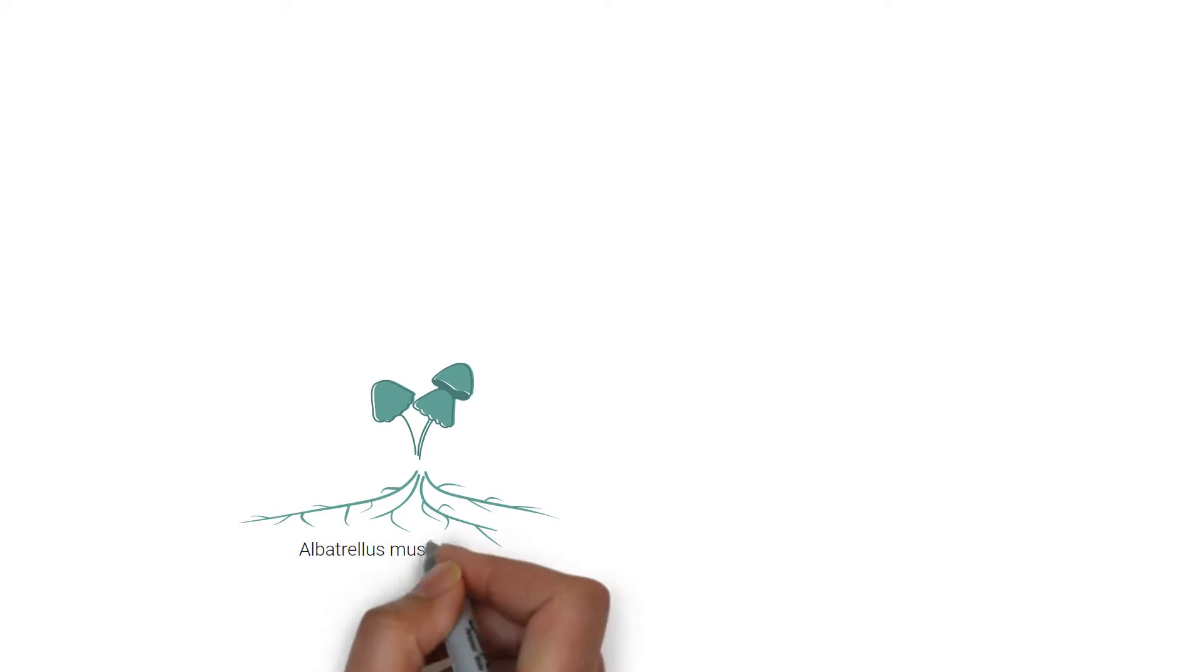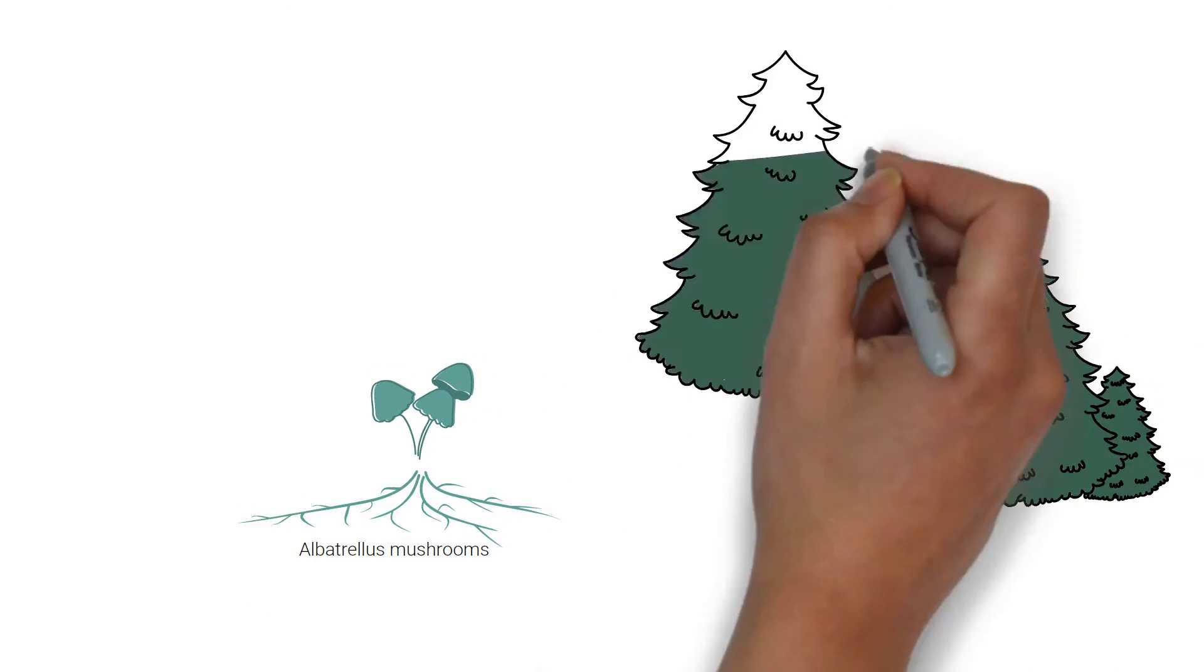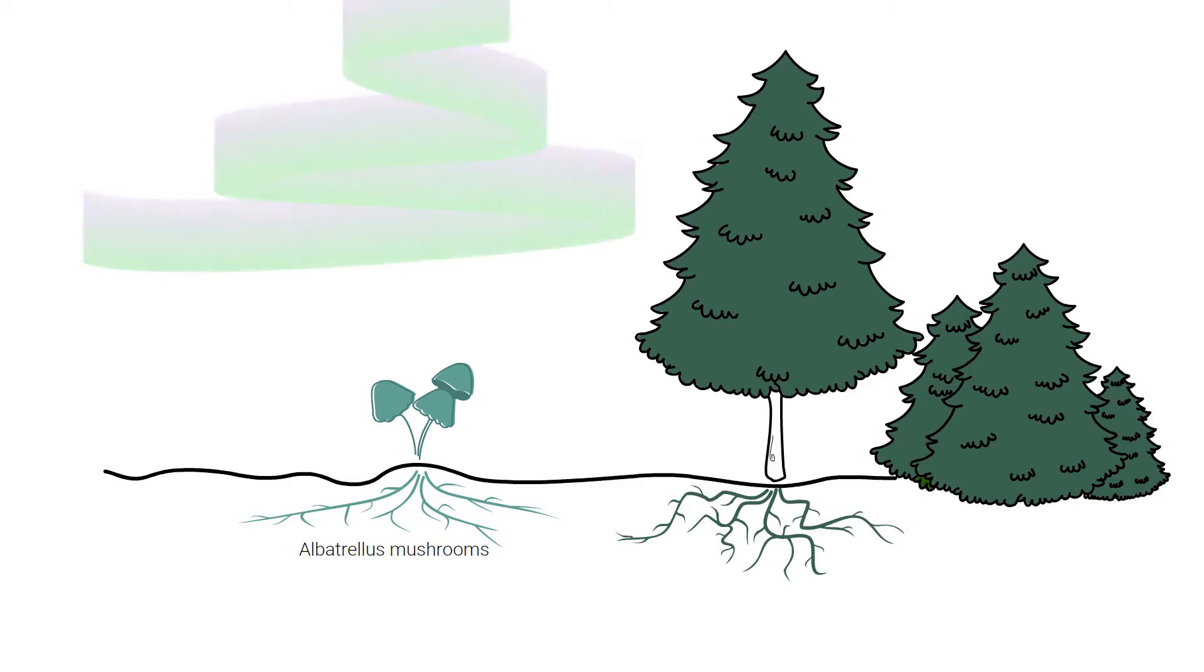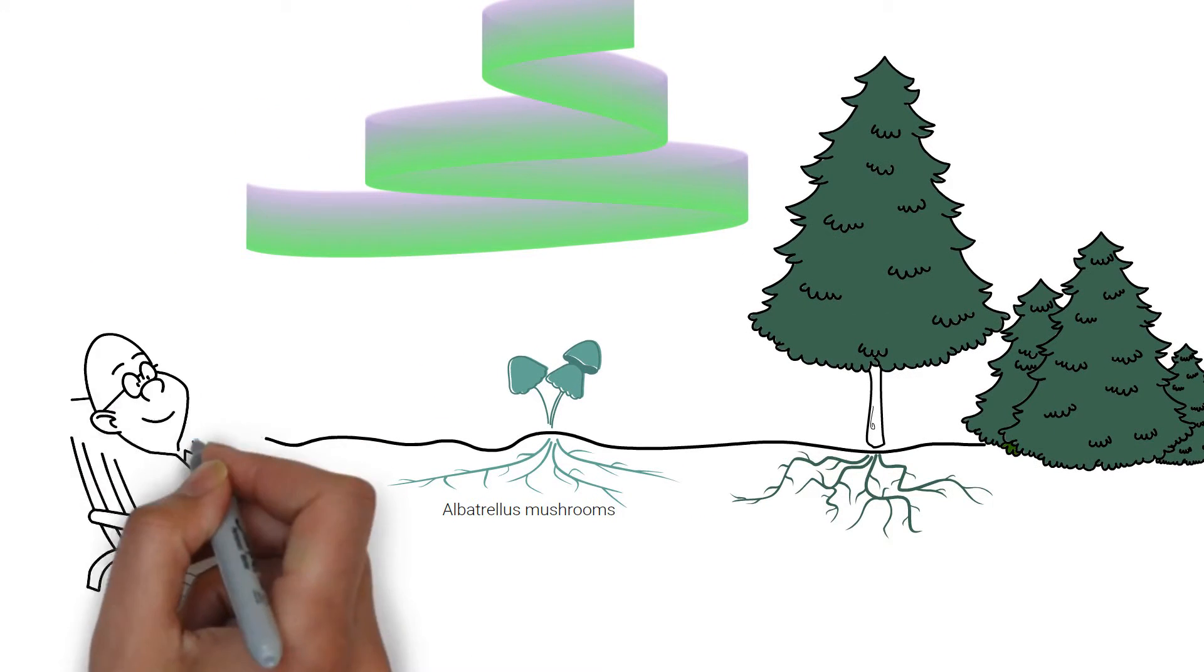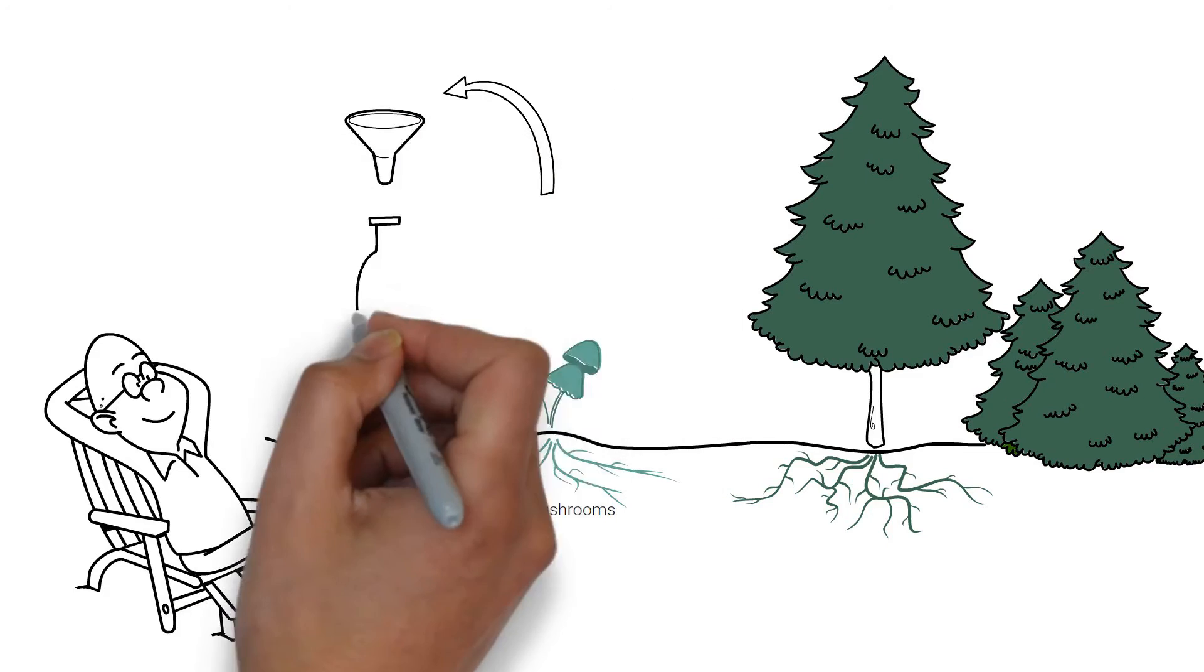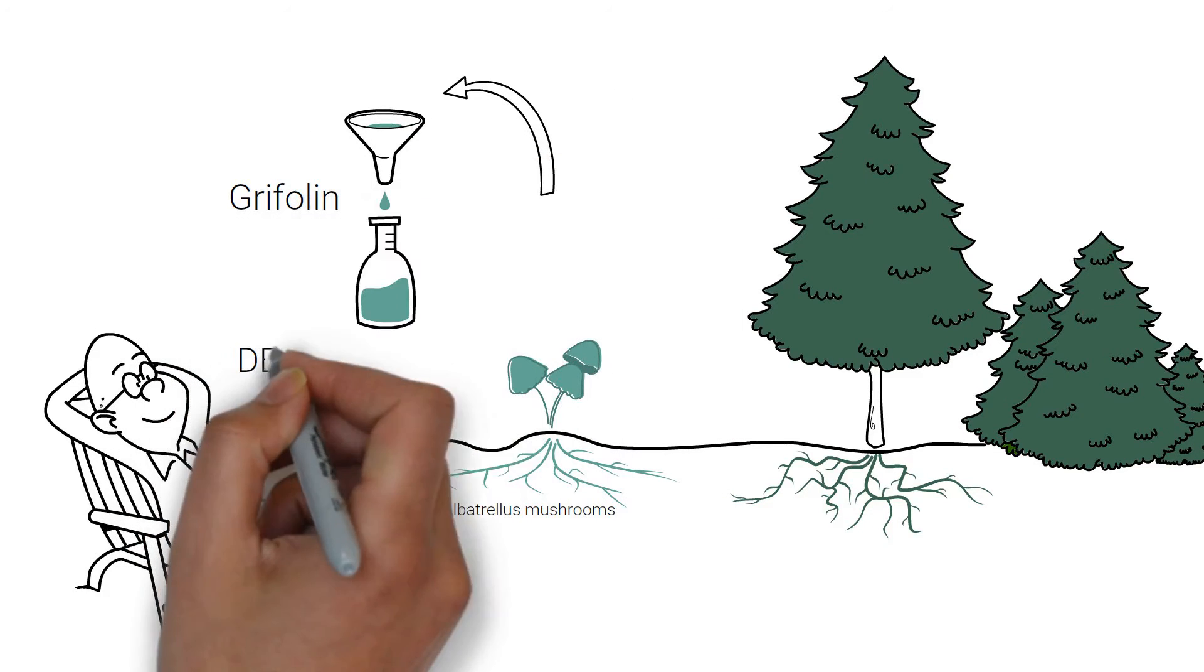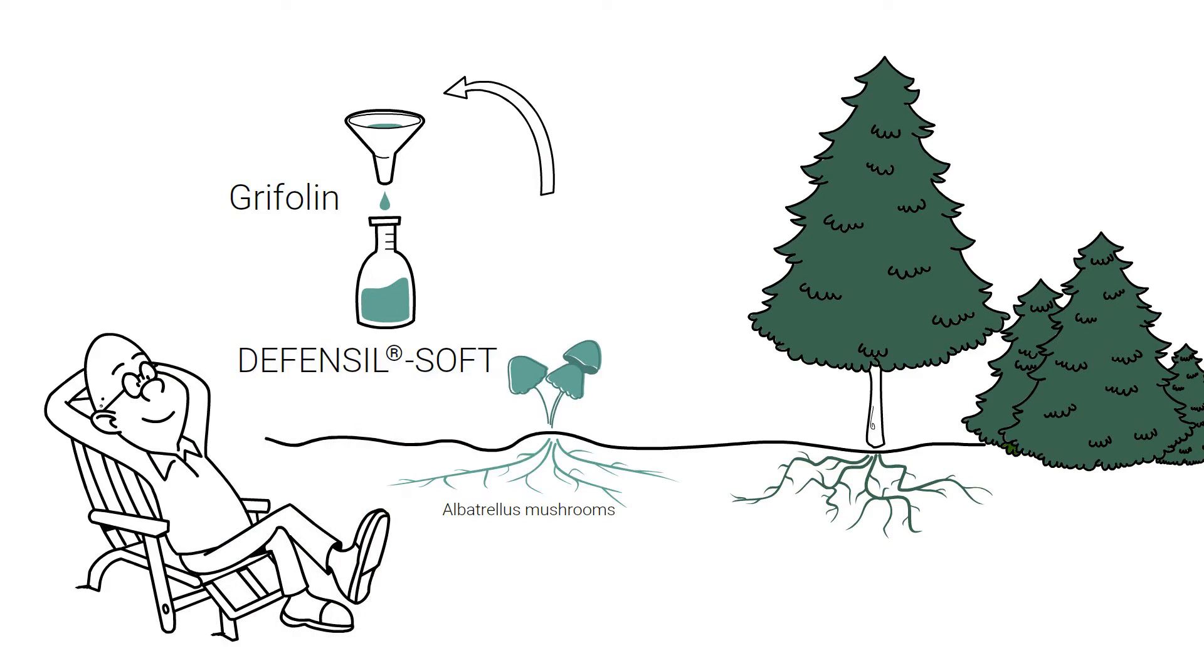We are in the home of Albatreus mushrooms, the boreal taiga forests of Finland under the magical northern lights. For Defensil Soft, we use wild-picked Albatreus mushrooms from which we extract grifalin derivatives, the neurocosmetic skin-soothing actives that have an immediate effect.